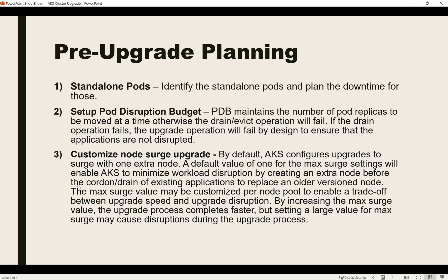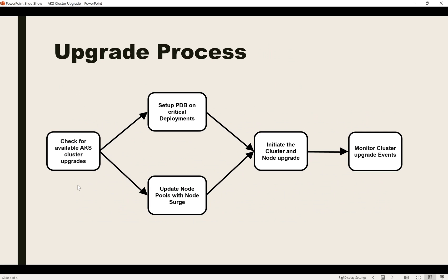The third consideration is node surge upgrade. By default, during the upgrade every node pool creates one extra node to handle draining and upgrading. If you want to reduce upgrade time, you can increase the node surge value — for example, setting it to 50% on 10 nodes means 5 extra nodes are created so pods are evicted quickly. However, this risks disruption since 5 nodes will drain simultaneously. It's recommended to use 33% for production clusters.